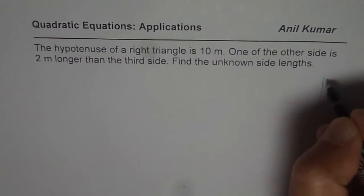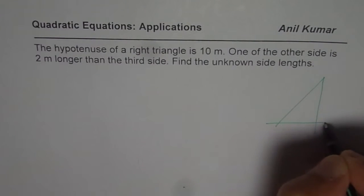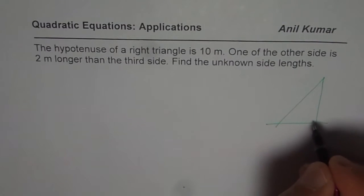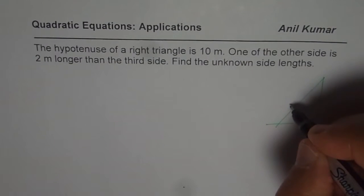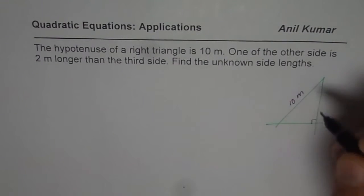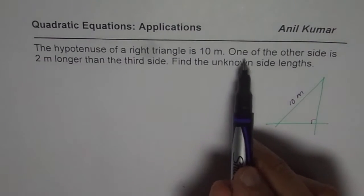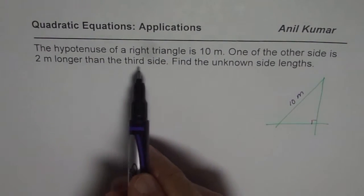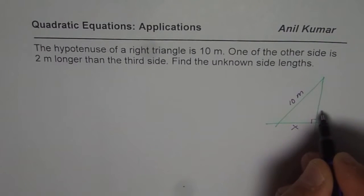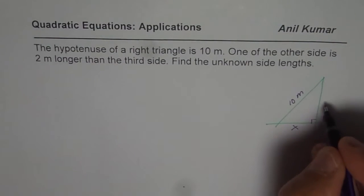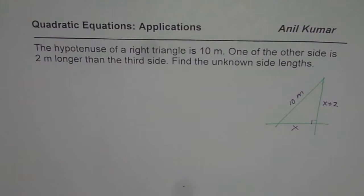Let us sketch a triangle first. This is the right triangle we are talking about. We are given that the hypotenuse is 10 meters, so this side is 10 meters. One of the other sides is 2 meters longer than the third. Let us say one side is x, then the other side is x plus 2. Those become the sides of our triangle.